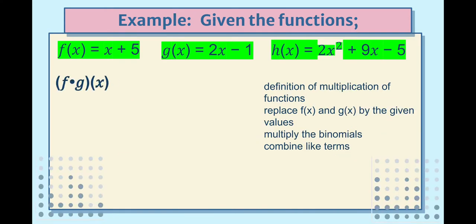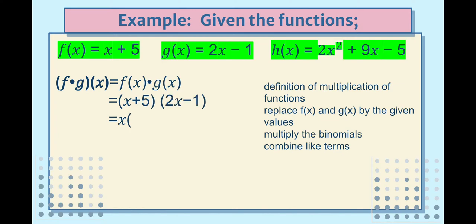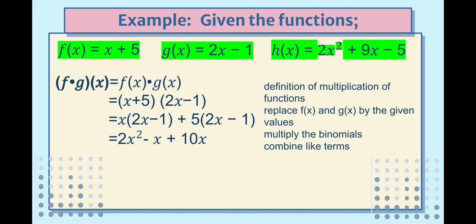For multiplication, (f · g)(x) = f(x) · g(x) by definition. Replace with values: (x + 5)(2x − 1). Multiply using the distributive property: x · 2x = 2x², x · (−1) = −x, 5 · 2x = 10x, and 5 · (−1) = −5. Combine like terms: 2x² + (−x + 10x) − 5 = 2x² + 9x − 5.